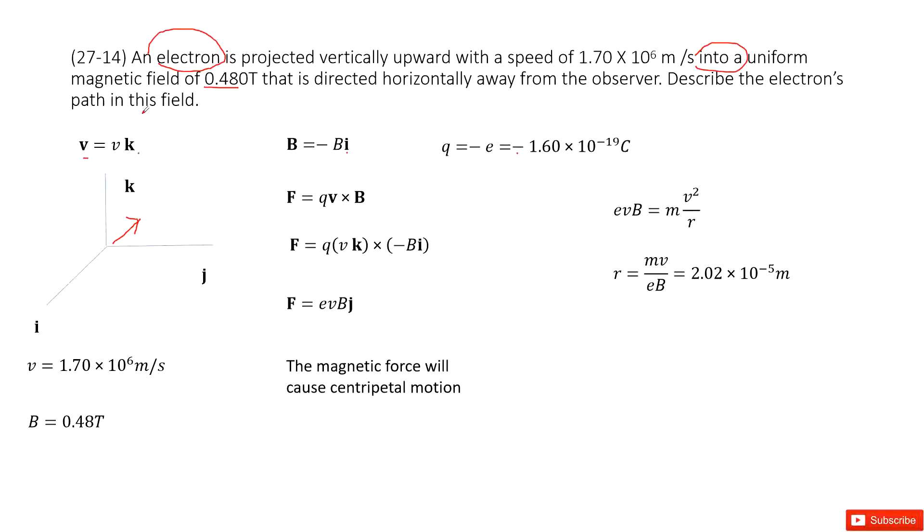We can see if the electrons move in the magnetic field, it will bring the Lorentz force. This is Q v cross B. So we input given quantities. This v is v k and B is negative B i direction. And this Q is negative e. So now we solve it.